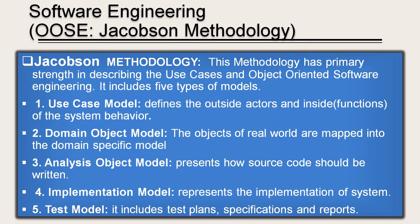The next methodology is object-oriented software engineering, given by Jacobson, also called Jacobson methodology. It has primary strength in describing use cases. It includes five types of models: the use case model, which defines outside actors and inside functions of system behavior; the domain object model, where real-world objects are mapped into a domain-specific model; the analysis object model, which presents how source code should be written; the implementation model, which represents the implementation of the system; and the test model, which includes test plans, specifications, and reports.